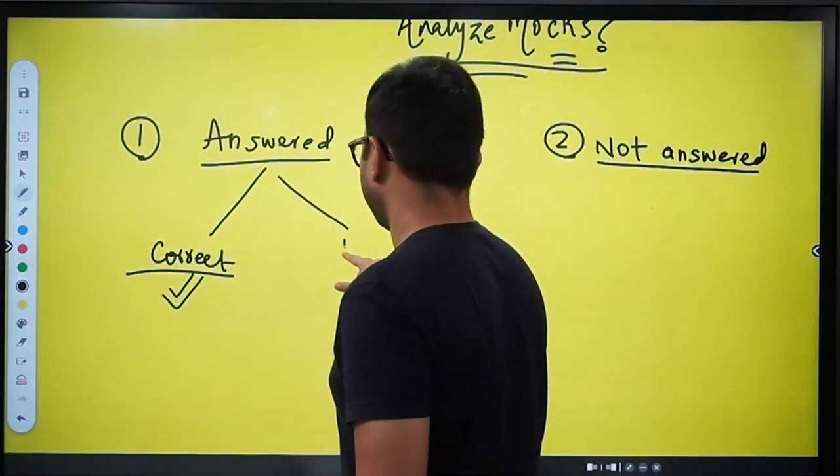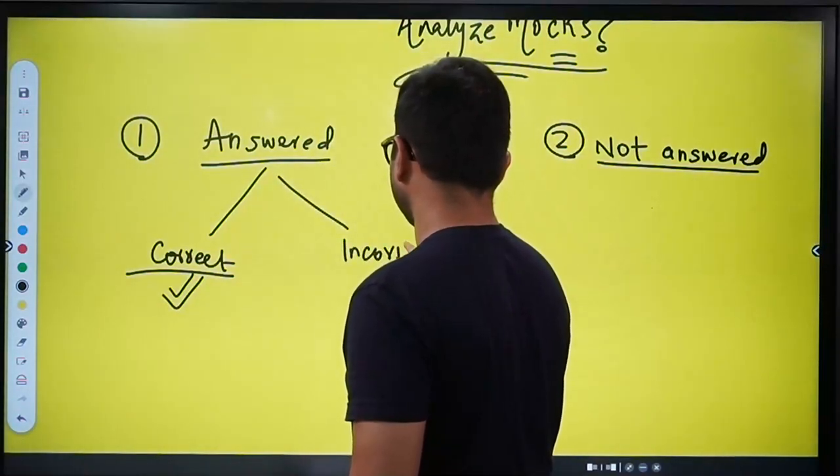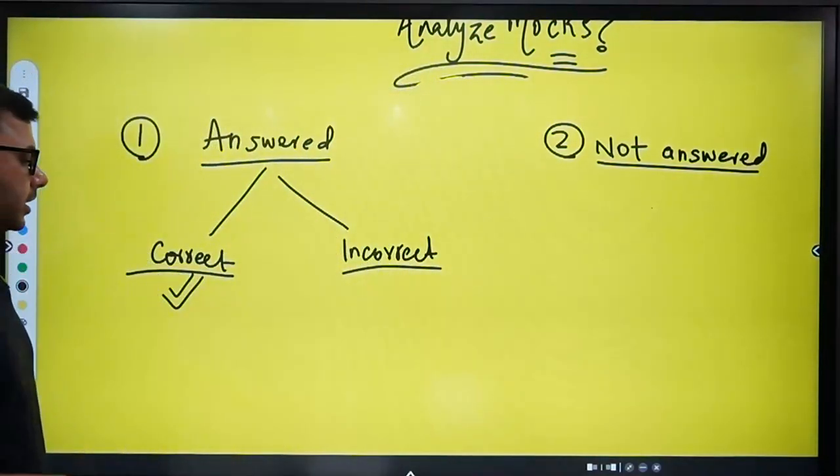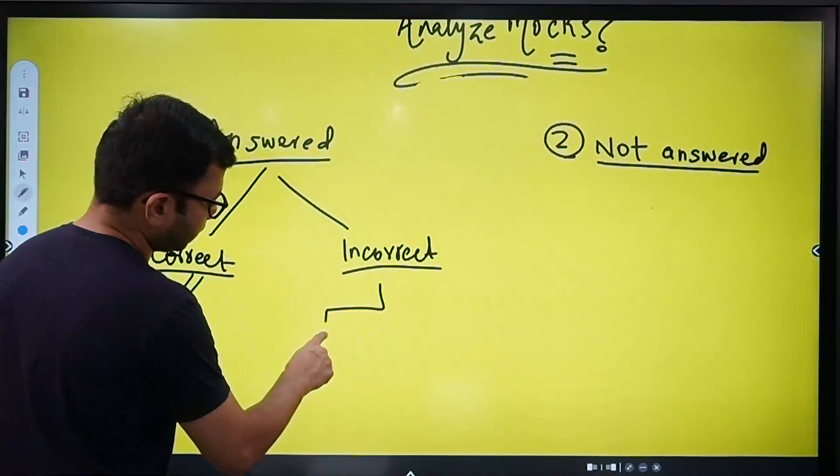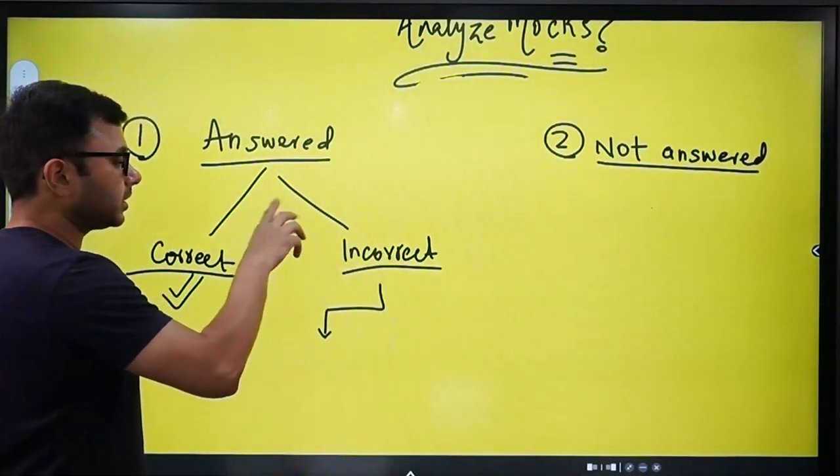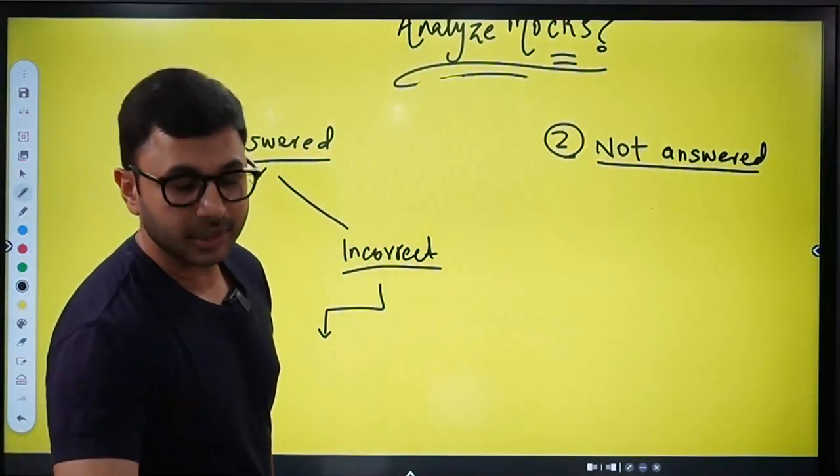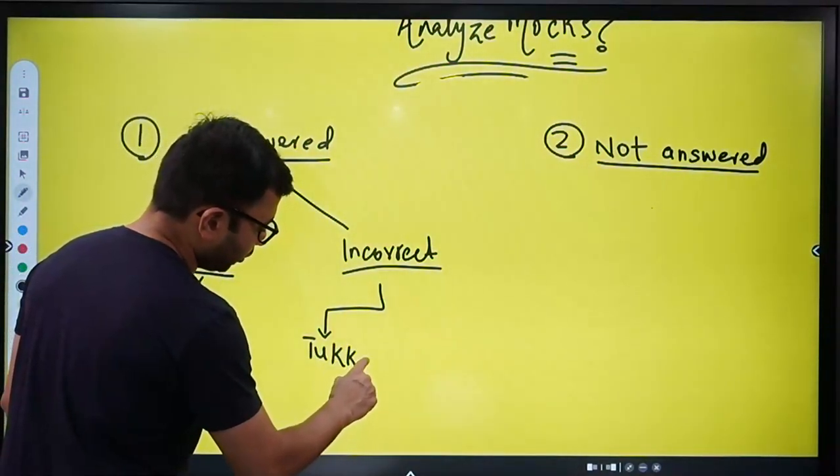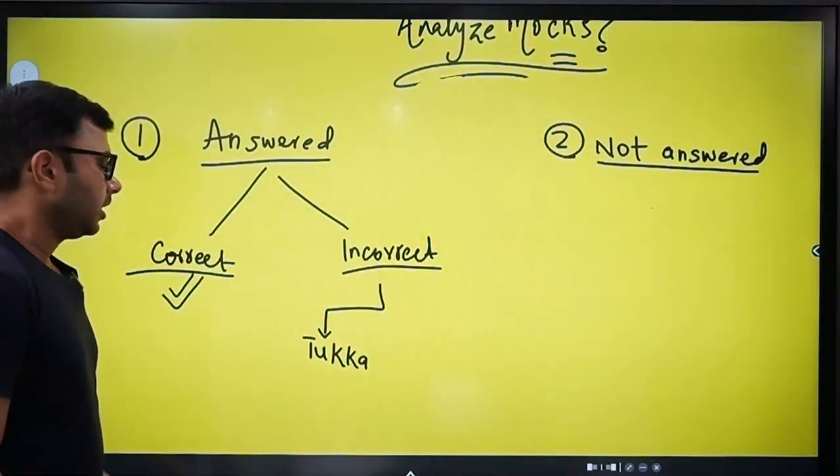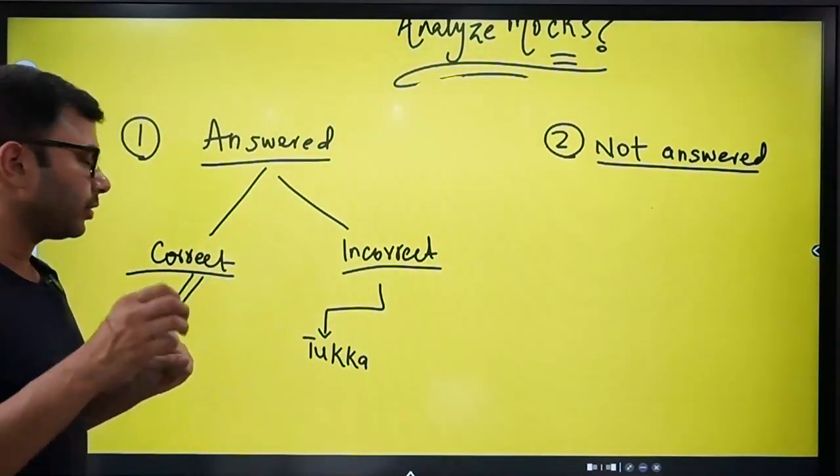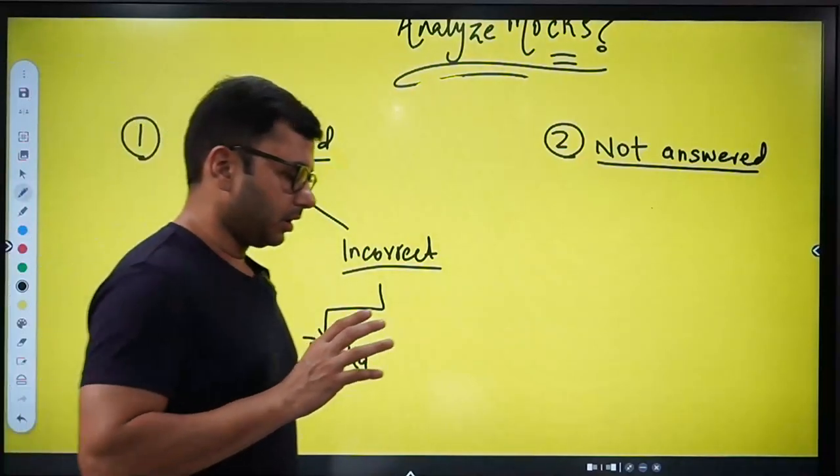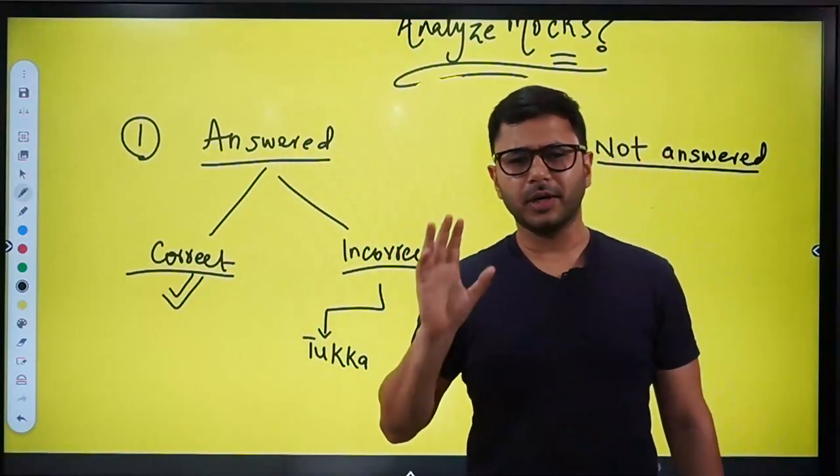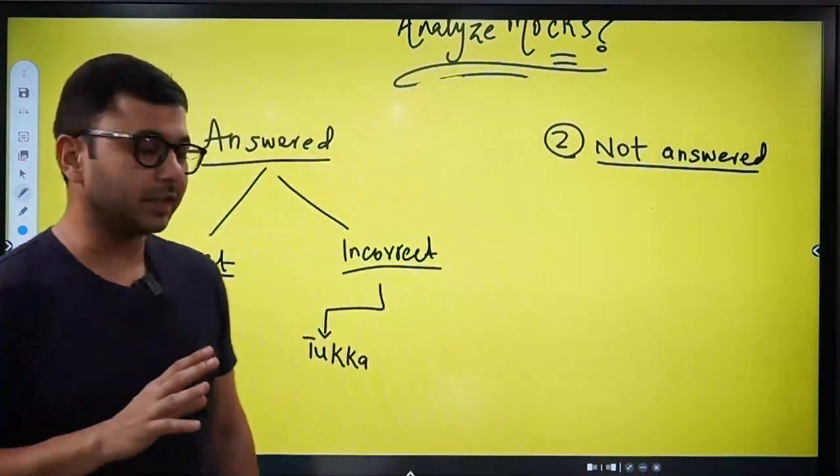Now coming to incorrect. I attempted, I answered the question, but it was incorrect. This will now have some further sub-categories, and all these sub-categories are important. We have to keep this in mind. Number one, as I just mentioned, either your guess will be correct, or your guess will be wrong. If it was a fluke, and it was correct, you can still say to yourself that it's okay, no problem, it happens. The mistake happened, but at least it was correct.